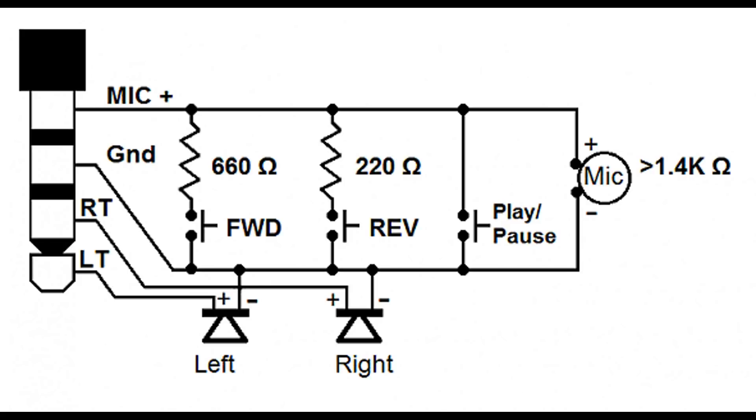But the interesting part is with the microphone connections. Between mic and ground, a condenser microphone is directly hooked up. But notice, the condenser microphone resistance has to be greater than 1.4 kilo ohms. Whereas pressing a forward and reverse button, for tracks of music, would do 660 ohms and 220 ohm resistances to change the current flow so that the phone would detect that the certain button was pressed. Play and pause would literally short out the microphone.